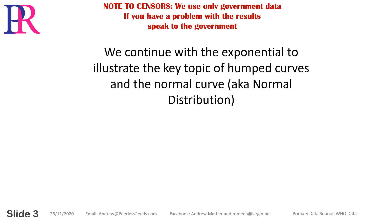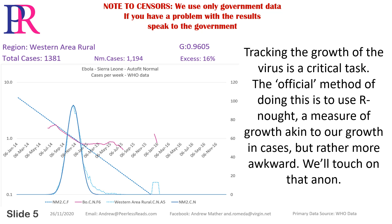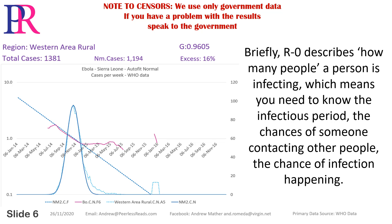We continue with the exponential to illustrate the key topics of hump curves and the normal curve, also known as the normal distribution. In this presentation we discuss mapping growth and growth decline. Tracking the growth of the virus is a critical task. The official method of doing this is to use R0, a measure of growth akin to our growth in cases, but rather more awkward. We'll touch on that shortly.